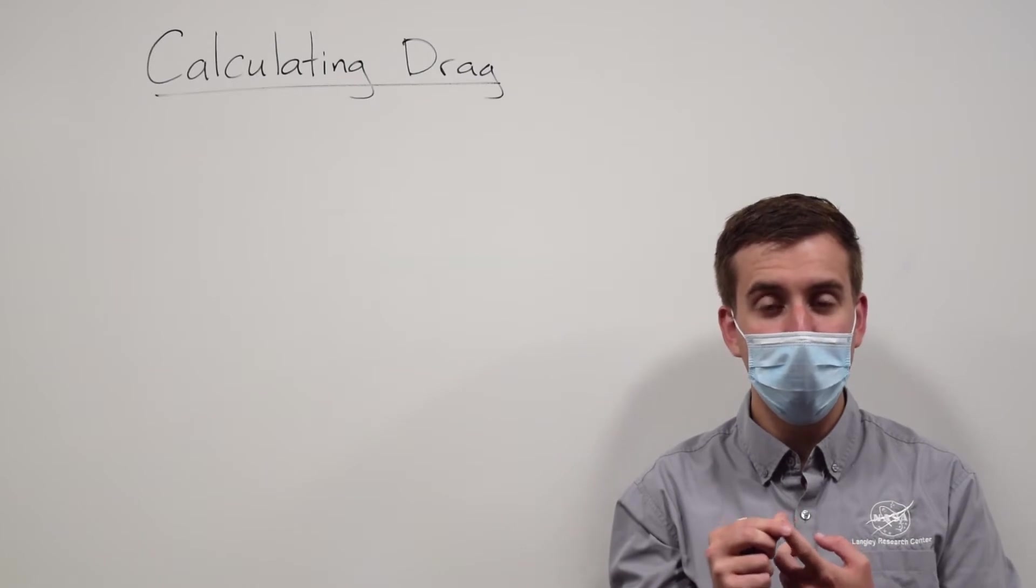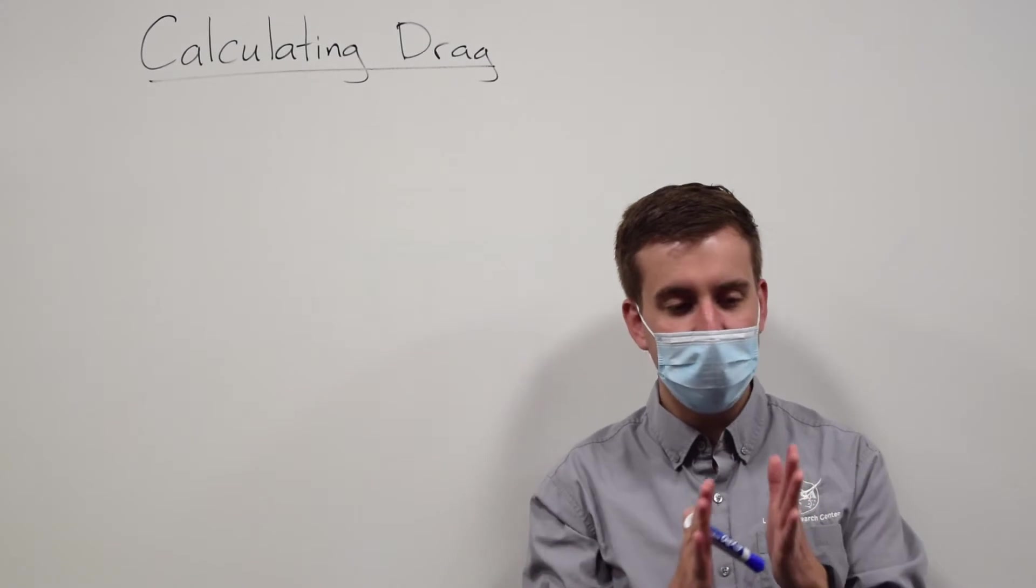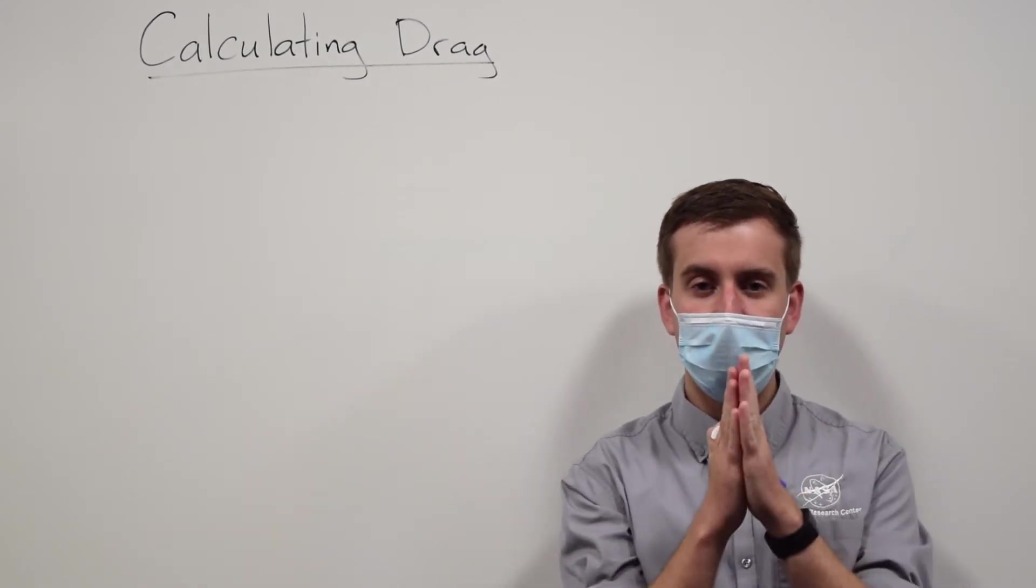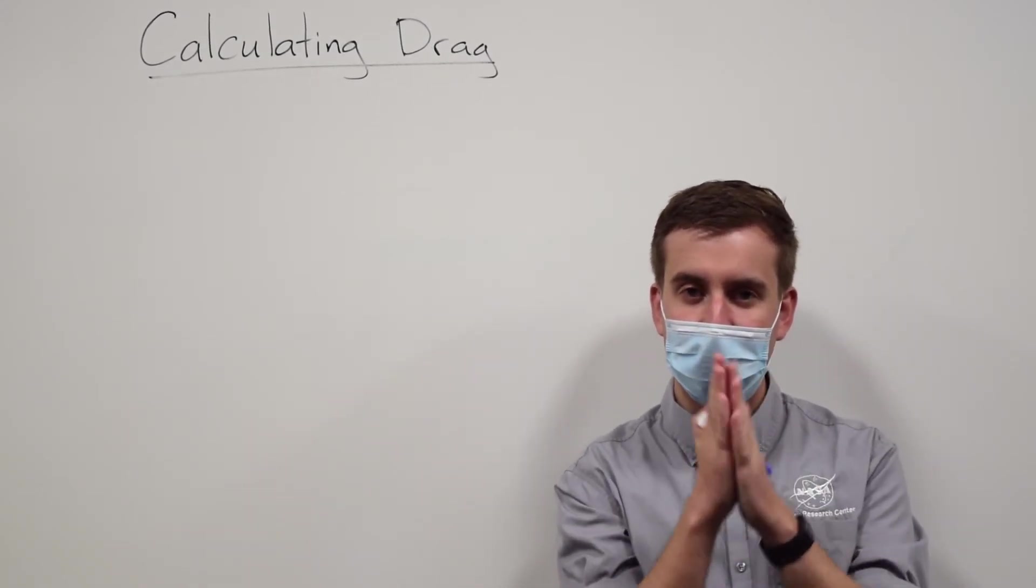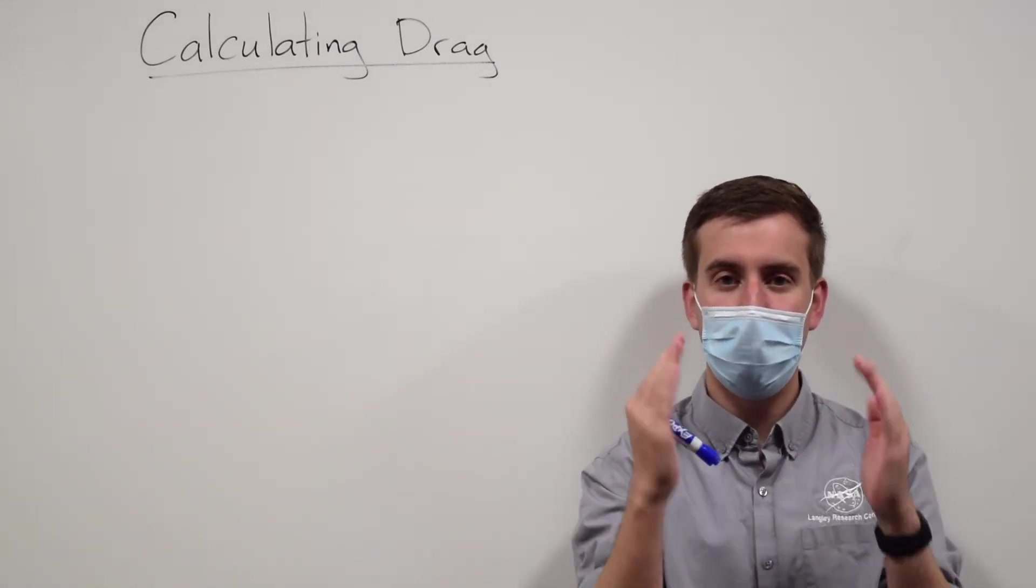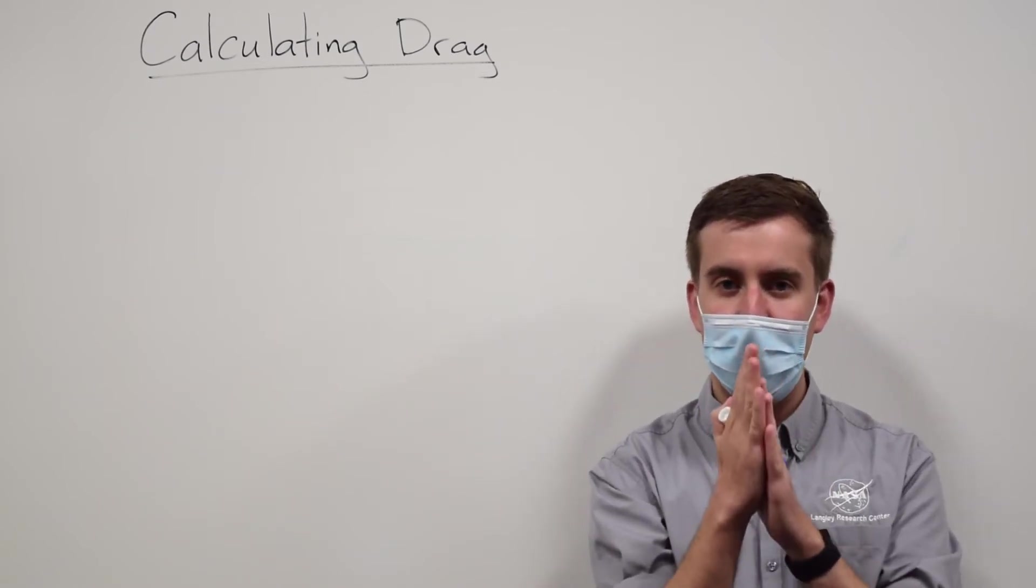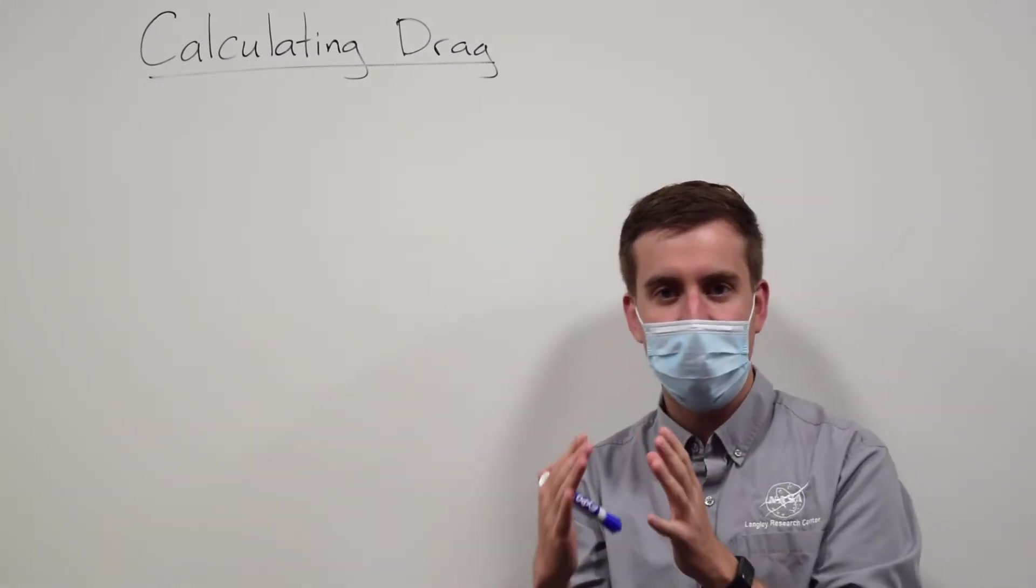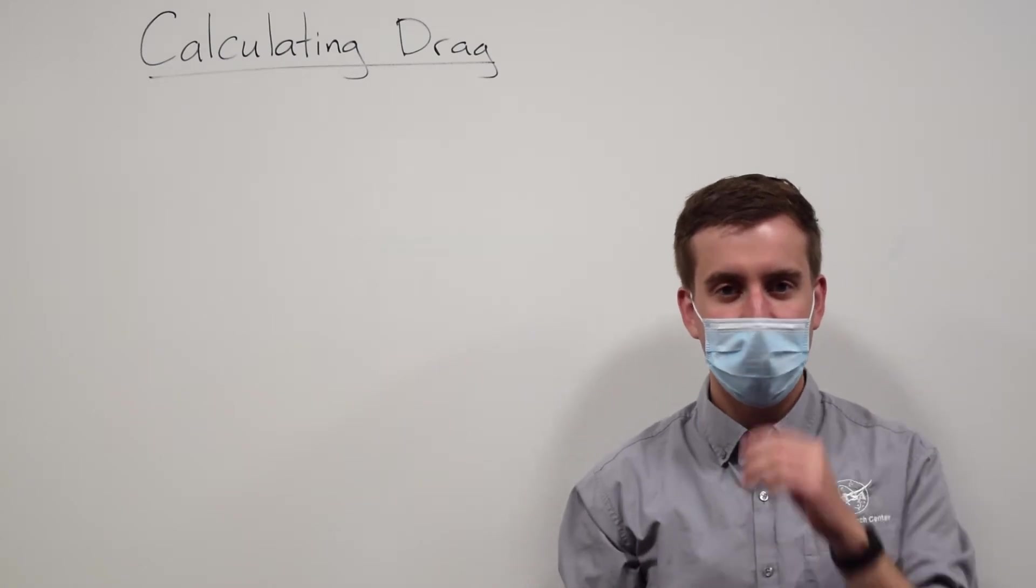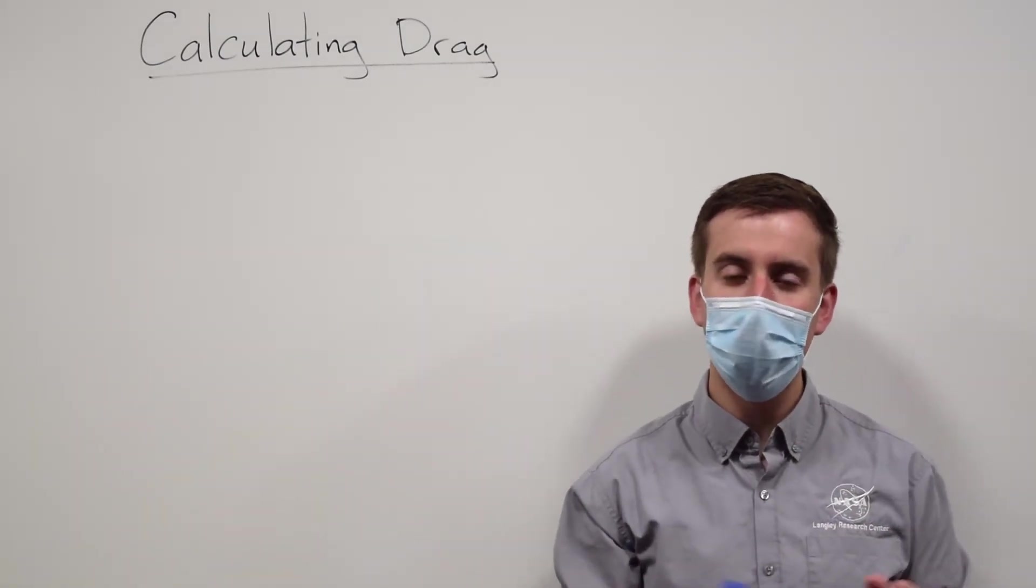But for now we will talk about how to calculate the skin friction drag. Skin friction is the friction that you get from just the air rubbing against the surface of the airplane like the wing or the main fuselage. It's exactly the same as if you were rubbing your hands together. You get friction between your hands. You also get friction between the airplane and the air. And that friction is dependent on a couple different things.